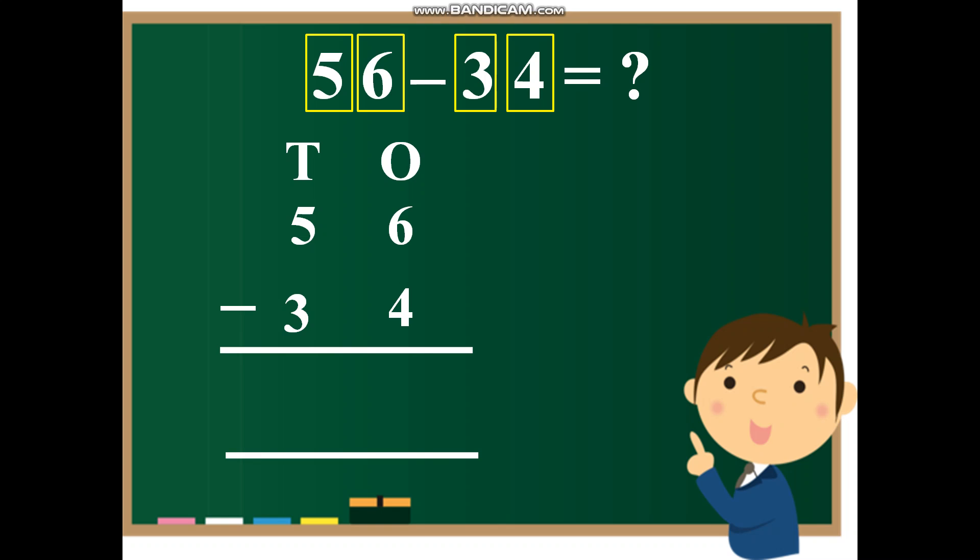Now as you know that the subtraction, it starts from right side. So first we will subtract the numbers in the ones house. That is six minus four. So six minus four will give me, yes, two.